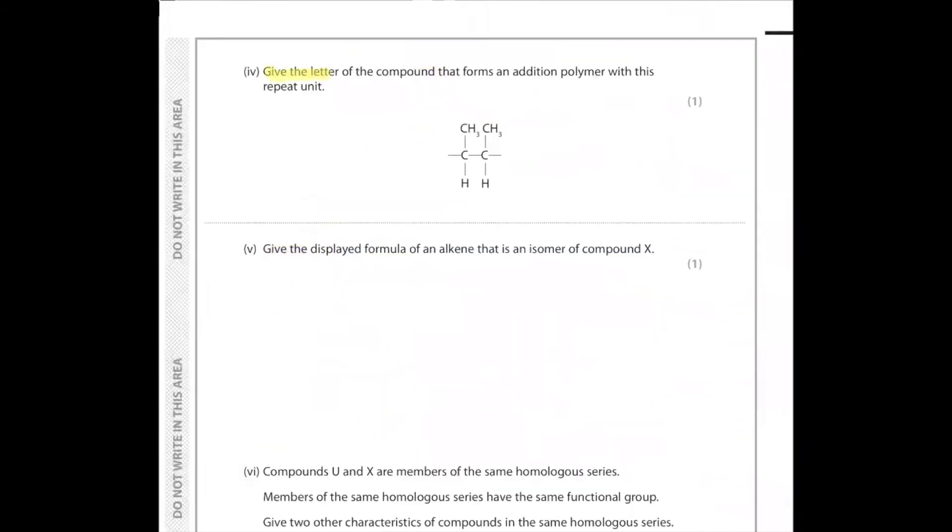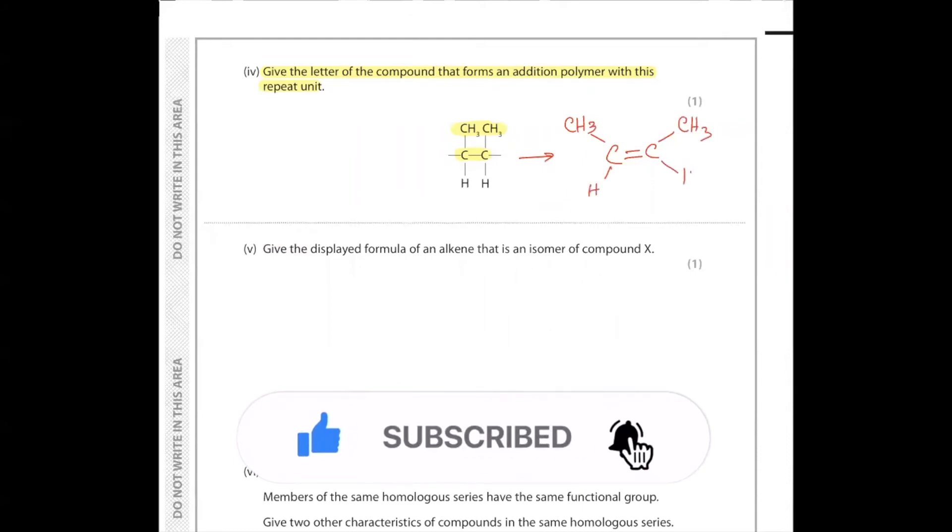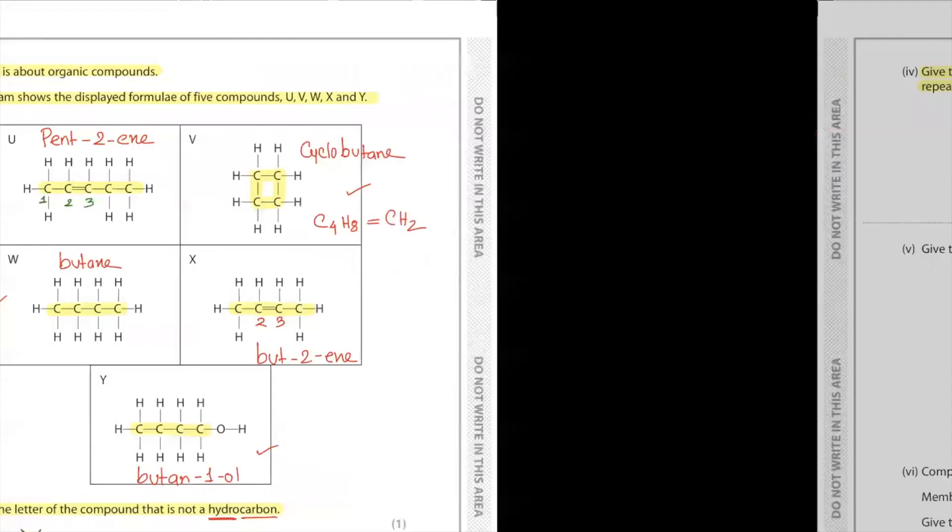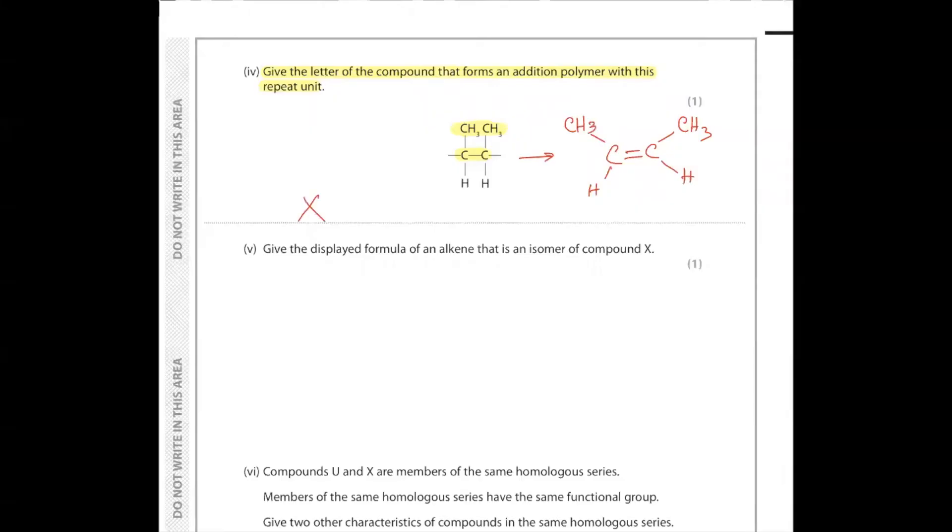Part 4. Give the letter of the compound that forms an addition polymer with this repeating unit. If we make the monomer out of this, we will get a carbon-carbon double bond with CH3, CH3, and hydrogens. Thereby, we can conclude that this is but-2-ene, and but-2-ene is X.